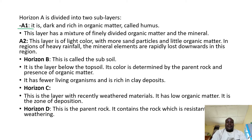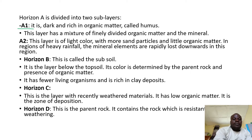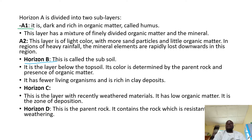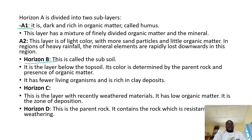Horizon A also has very many living organisms because it is on the acid surface. Then we have horizon B, which is called the subsoil. It is under the topsoil. Its color is determined by the parent rock and the presence of organic matter in the topsoil. It has few living organisms and is rich in clay deposits.